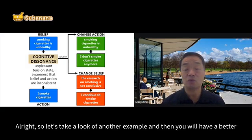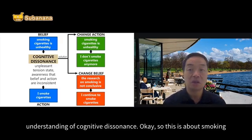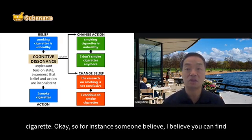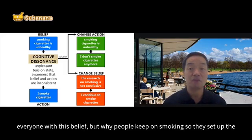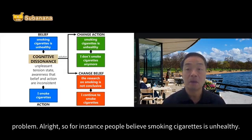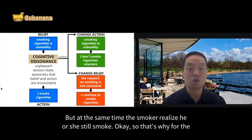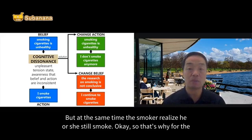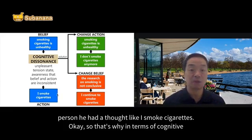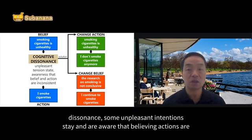Let's take a look at another example for a better understanding of cognitive dissonance — this one is about smoking cigarettes. People believe that smoking cigarettes is unhealthy; everyone knows smoking is bad. But at the same time, the smoker realizes he or she still smokes. So that person has a thought: 'I smoke cigarettes,' which is inconsistent with the belief that smoking is unhealthy.